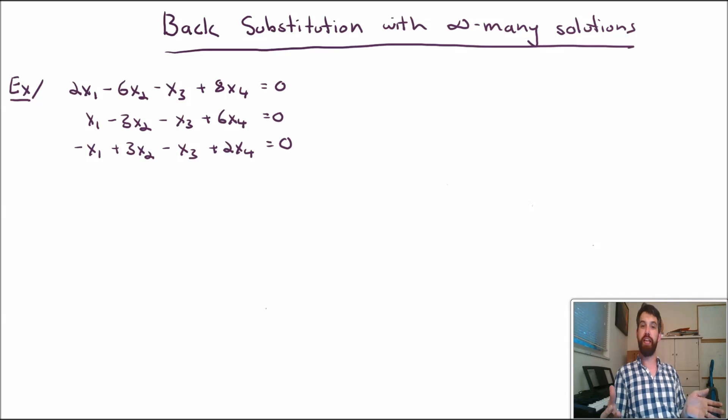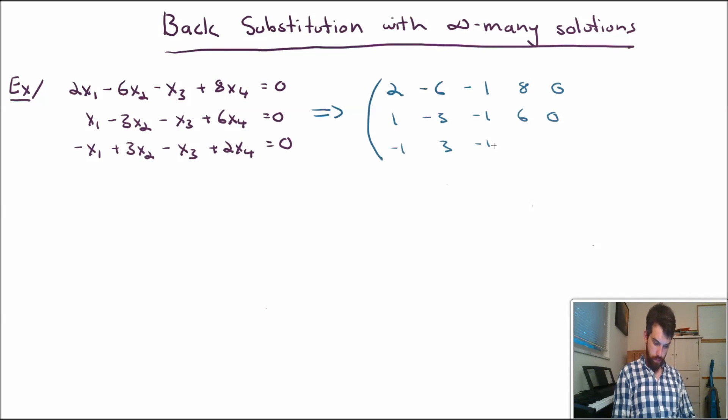So the first part is the somewhat tedious process of putting it into row echelon form, that we are going to see an enormous amount of times in this course and we need to become very efficient at. First step, let's translate it from a system into a matrix by getting rid of the different variables and just looking at the coefficients and that constant of zeros on the right-hand side. All right, there we go.